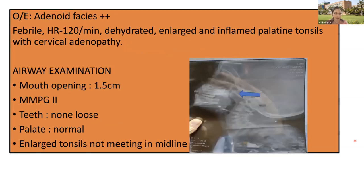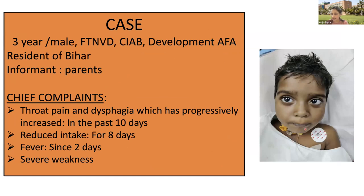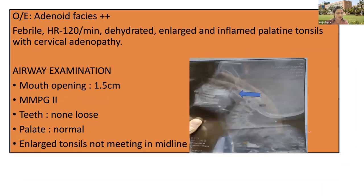On examination, the child had adenoid facies — typical features including flattened mid-face and prominent eyes. The child was febrile with tachycardia and was dehydrated. There were enlarged and inflamed palatine tonsils which could be easily seen, and cervical lymph nodes could be palpated. On X-ray head and neck, the adenoids were enlarged with soft tissue shadow in the nasopharynx. On airway examination, mouth opening was 1.5 cm, Mallampati grade 2, no loose teeth. The palate was normal but tonsils were enlarged without meeting in midline.